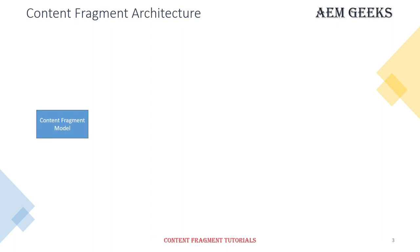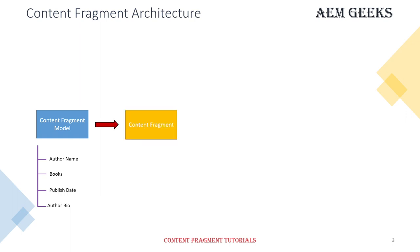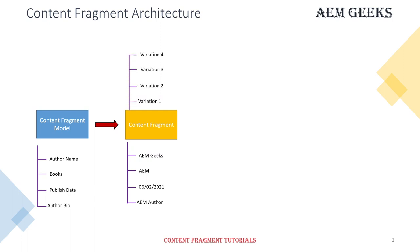Let's understand the architecture of content fragments. First, you have to create a content fragment model. This model defines the structure of your content fragment. In the content fragment model, you define the fields and their types. You then create content fragments using this model, so whatever fields you define in the content fragment model will be available for adding your content.